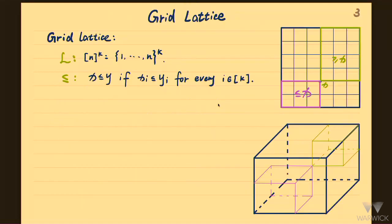We will focus on the concrete lattice which is a grid lattice. The set will be a k-dimensional grid with length n, and the order is the natural partial order where we say two points x is at most y if it is coordinate-wise true — for all coordinates i, x_i is at most y_i.